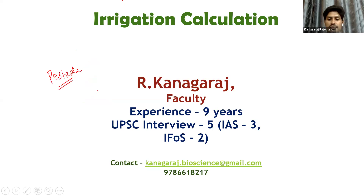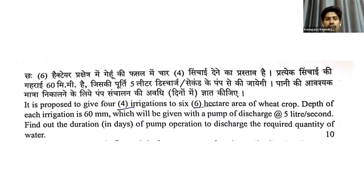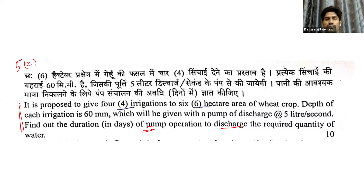We will look at this calculation from this year's question paper. In the compulsory question 5E, they are asking about the total time duration for the pump to operate to discharge the required water. For a wheat field, it is proposed to give four irrigations for a six-hectare area. The depth of each irrigation is 60 millimeters, and the pump discharge rate is 5 liters per second.